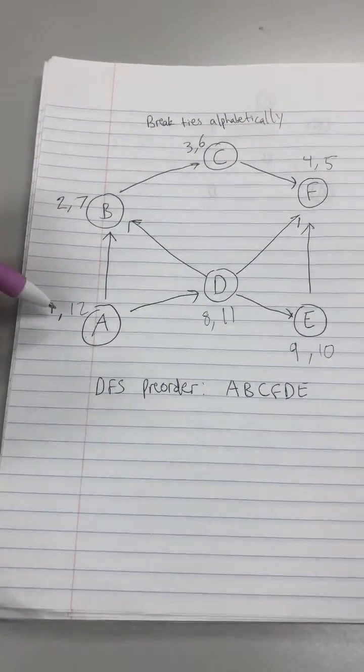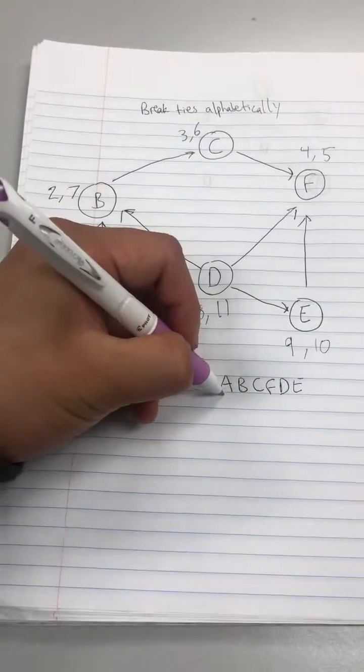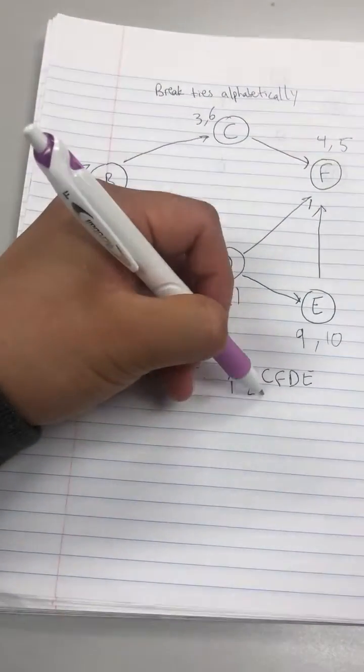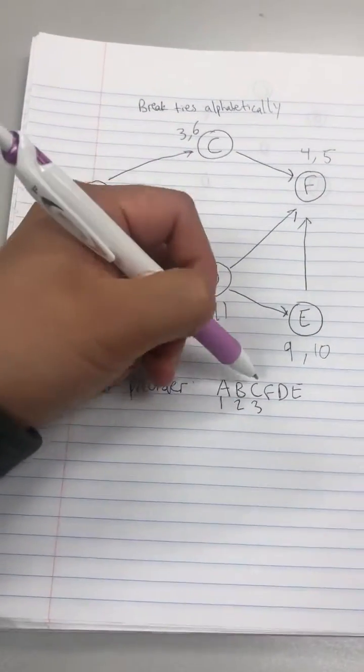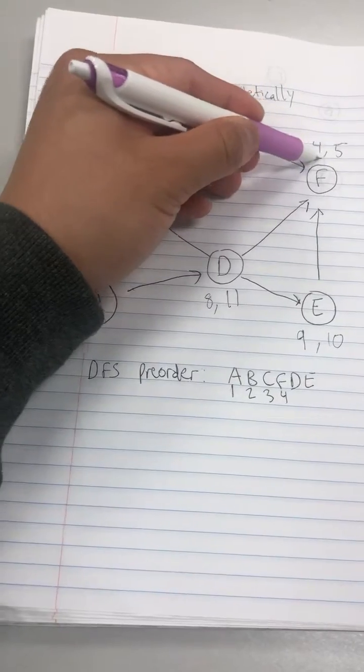And I'll write down their ordered pair number just to make it clear. So A has one, B has two, C has three. This is a helpful way to double check. F has four in the first slot of the ordered pair. That's what I'm talking about.